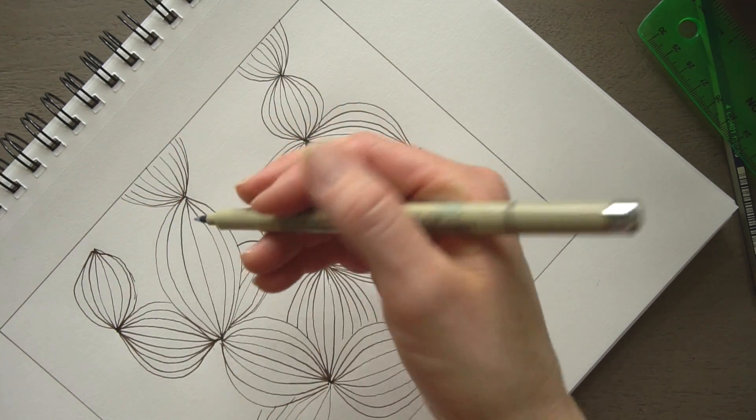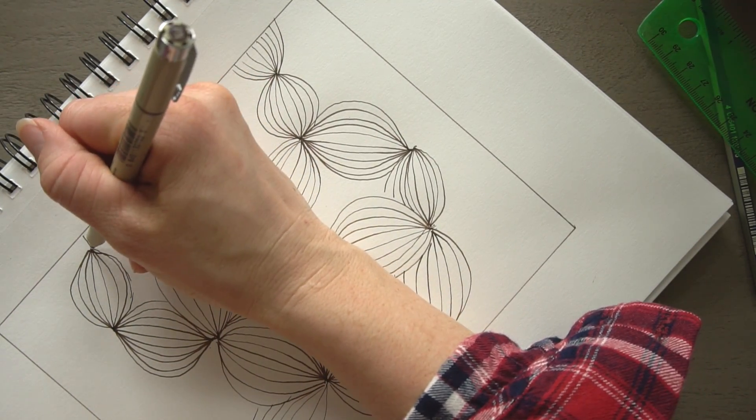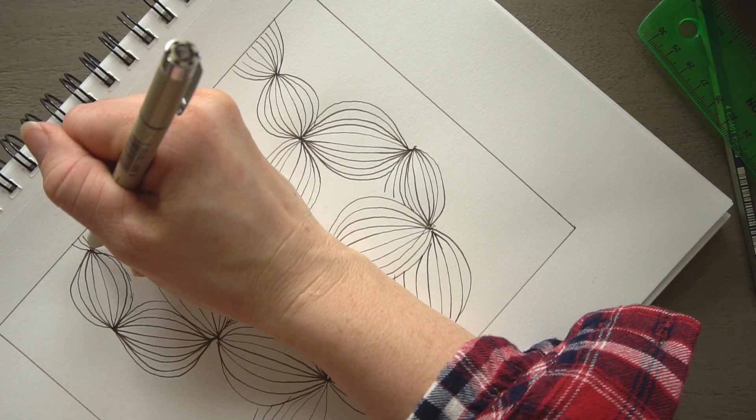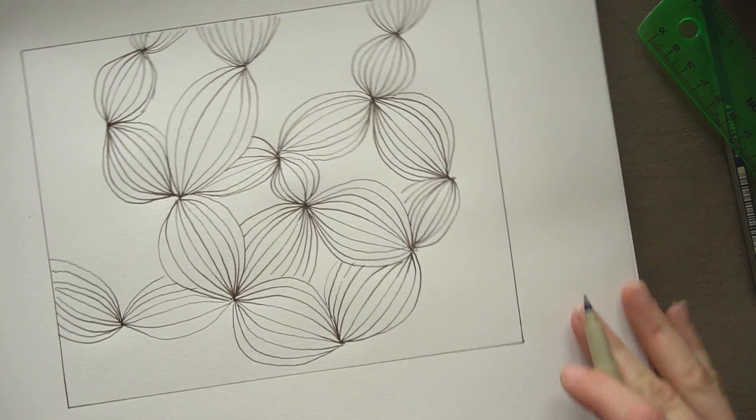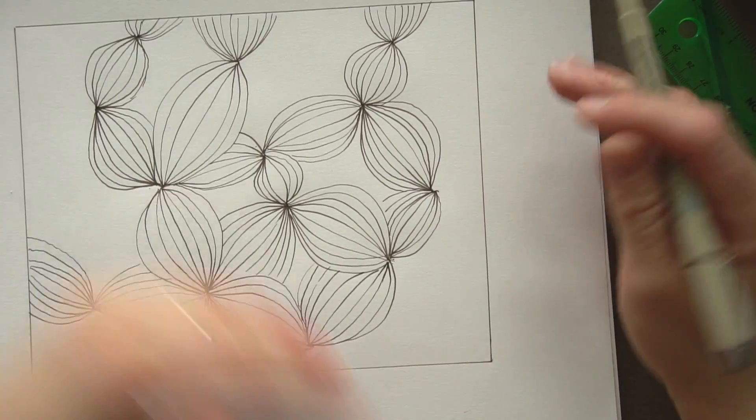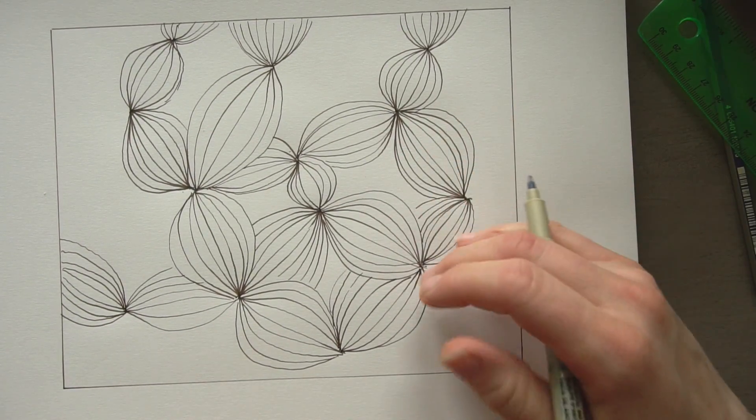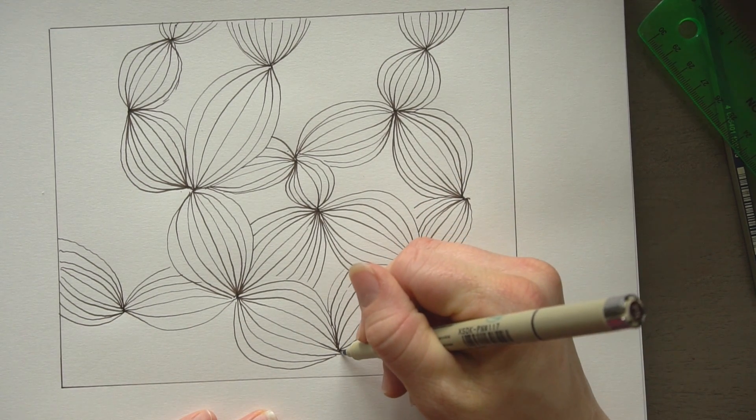And even if you're using a crayon, you can make these lines harder and softer. Okay, and then just kind of look at it and decide if you want to add anything else. I feel like something needs to happen down here.